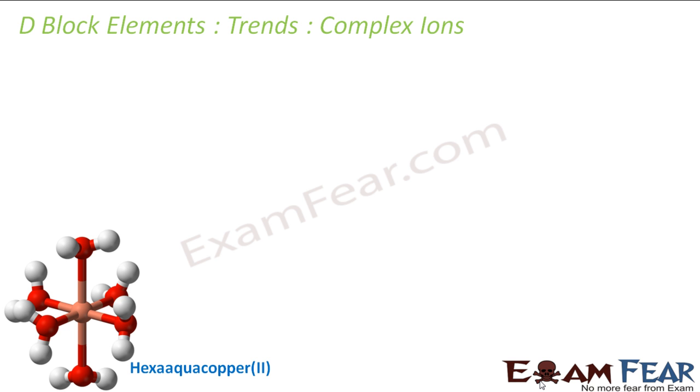Complex compounds are formed when metal ions, typically transition metals, bind with a number of anions or neutral molecules to form complex species with specific characteristics. For example, hexaaquacopper - copper with six water molecules. Other examples of complex ions include Fe(CN)6 3 minus, Fe(CN)6 4 minus, or Cu(NH3)4 2 plus. Here NH3 and CN minus are ligands.